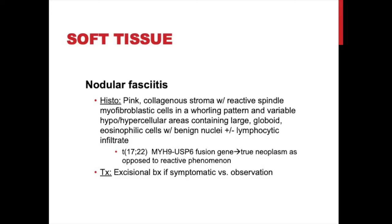Microscopically, these have very pink collagenous stroma with reactive spindle myofibroblastic cells in a whirling pattern, and variable hypo- or hypercellular areas containing large globoid eosinophilic cells with benign nuclei, with or without lymphocytic infiltrate. Though always classically thought to be a reactive phenomenon, we've now identified a translocation at 17;22 with MYH9-USP6 fusion gene, hinting this may be a true neoplasm. Treatment is usually excisional biopsy since they are subcutaneous and easily resectable; otherwise, biopsy and observe, as some spontaneously regress.